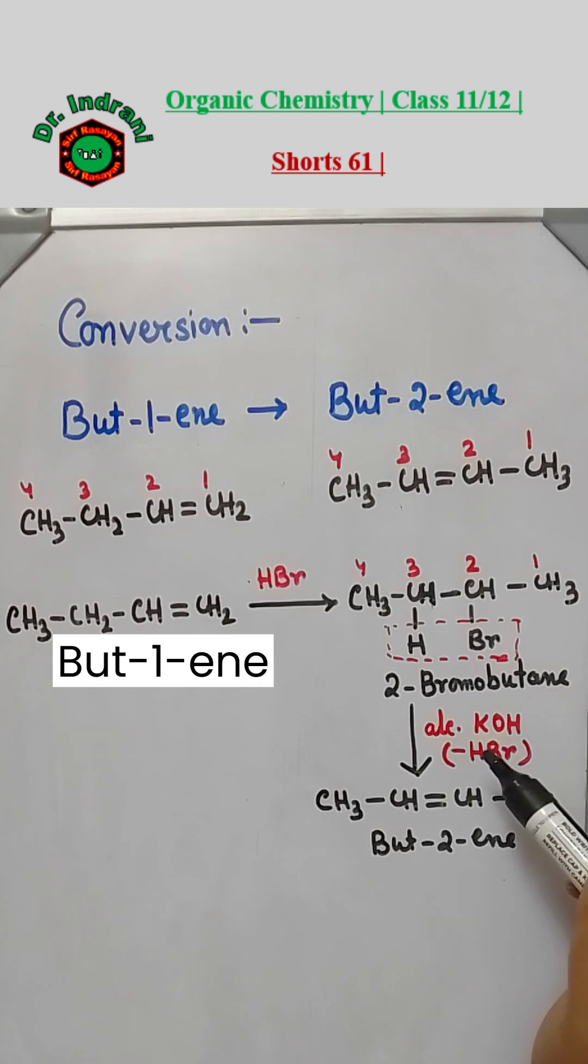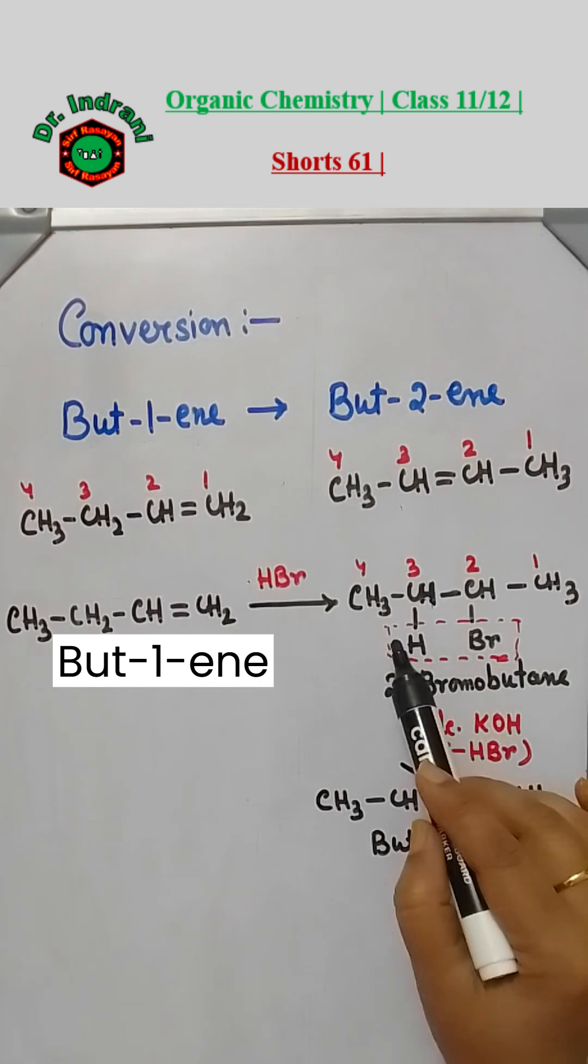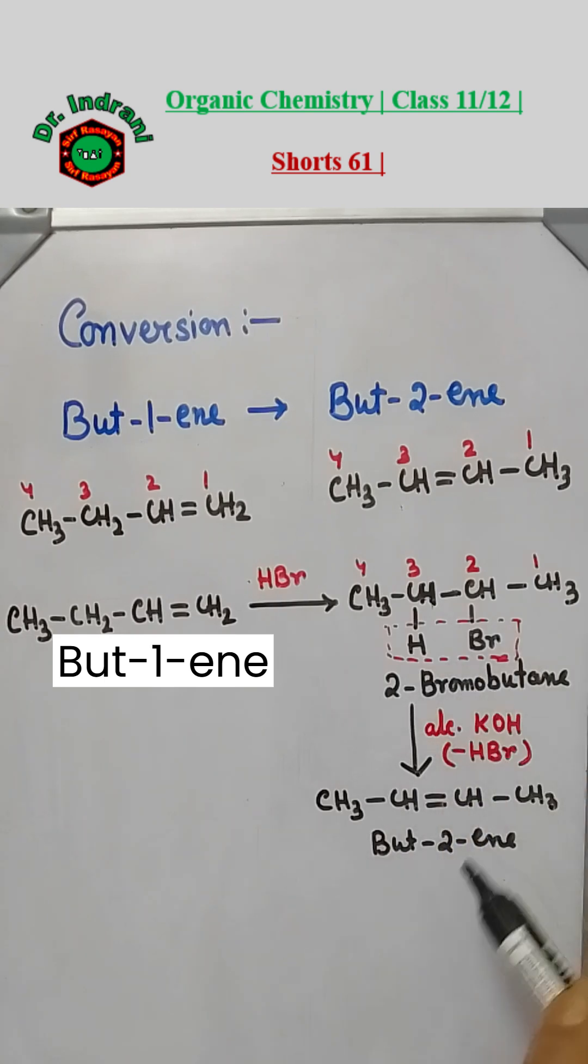If you treat this compound with alcoholic KOH, dehydrohalogenation will take place. HBr will go and we will get but-2-ene. Hydrogen can go from here also, but in that case we will get the least substituted alkene. We should get the more substituted alkene, which will be the stable one and major product.